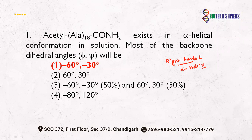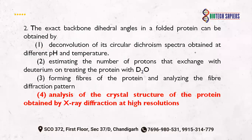As we know from the Ramachandran plot, both the phi and psi angles of the right-handed alpha helix are negative, and that is why the correct answer corresponds to negative dihedral angles. The second question: exact backbone dihedral angles in a folded protein can be obtained by X-ray diffraction at high resolution.